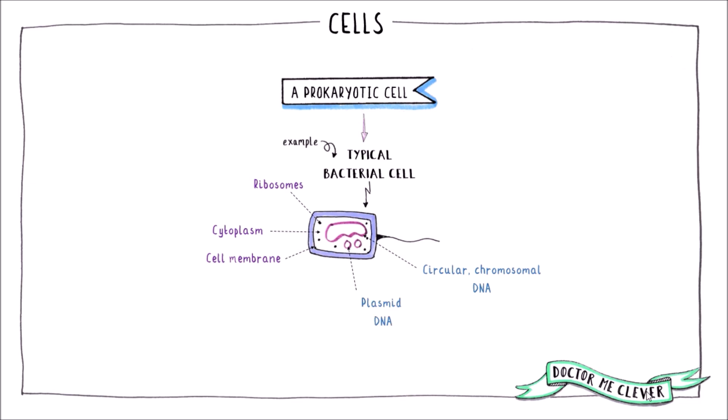Plasmid DNA, small loops of DNA that can be passed between bacterial cells. They contain extra information such as antibiotic resistance genes.